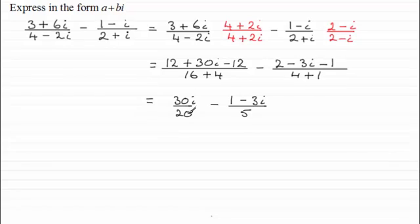And what I notice now is I can reduce this fraction 30 over 20. If I divide top and bottom by 10 I'm going to end up with 3i all over 2 there. 3 over 2 i. And so I can expand this second fraction here. I've got 3 over 2 i then minus 1 fifth and then plus 3 fifths i.